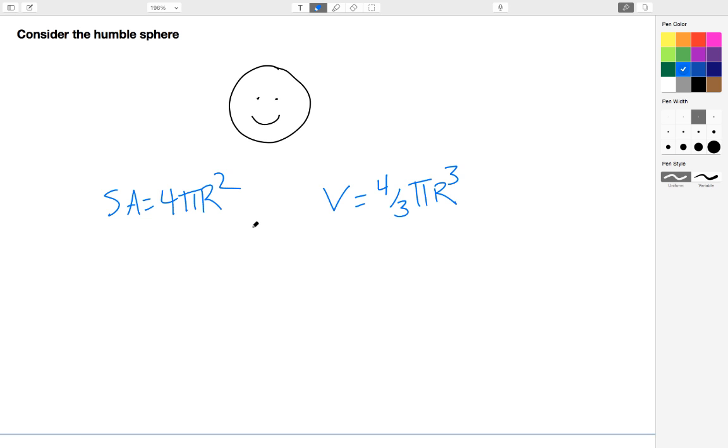Now one way to think about how large my surface area is is to compare it to the volume, and to do that we can calculate what's known as the surface area to volume ratio. So if I divide my surface area 4πr² divided by the volume,